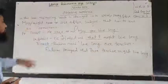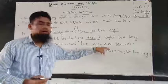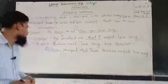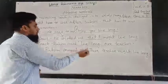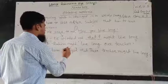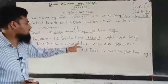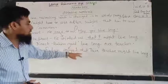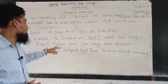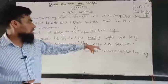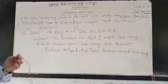Next example — Direct: Rohim said, 'Live long our teacher.' Rohim said this as a prayer. It is also an optative sentence. So reporting verb 'said' is changed to 'prayed', and 'that' is used as a connector. Indirect: Rohim prayed that their teacher might live long.